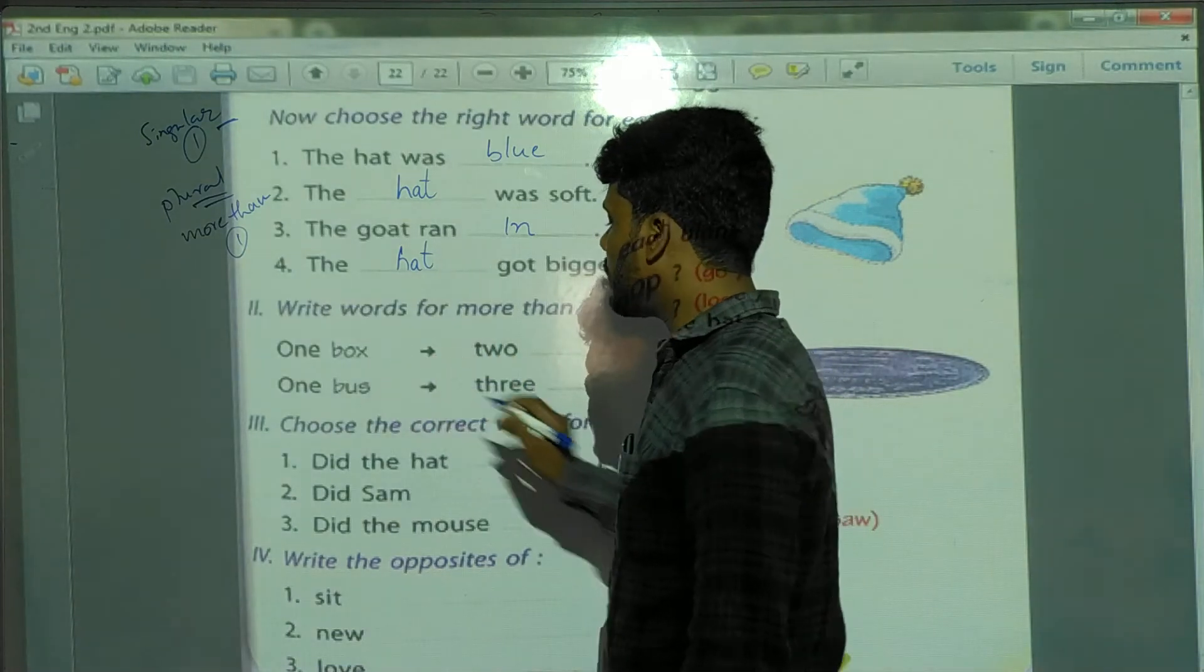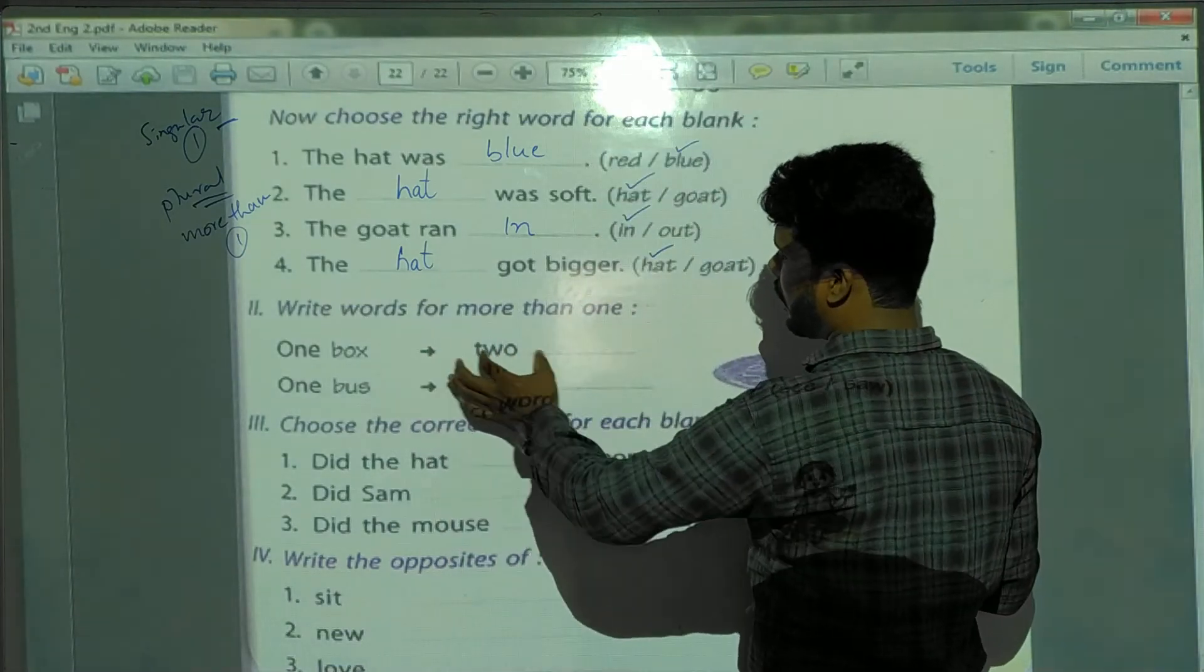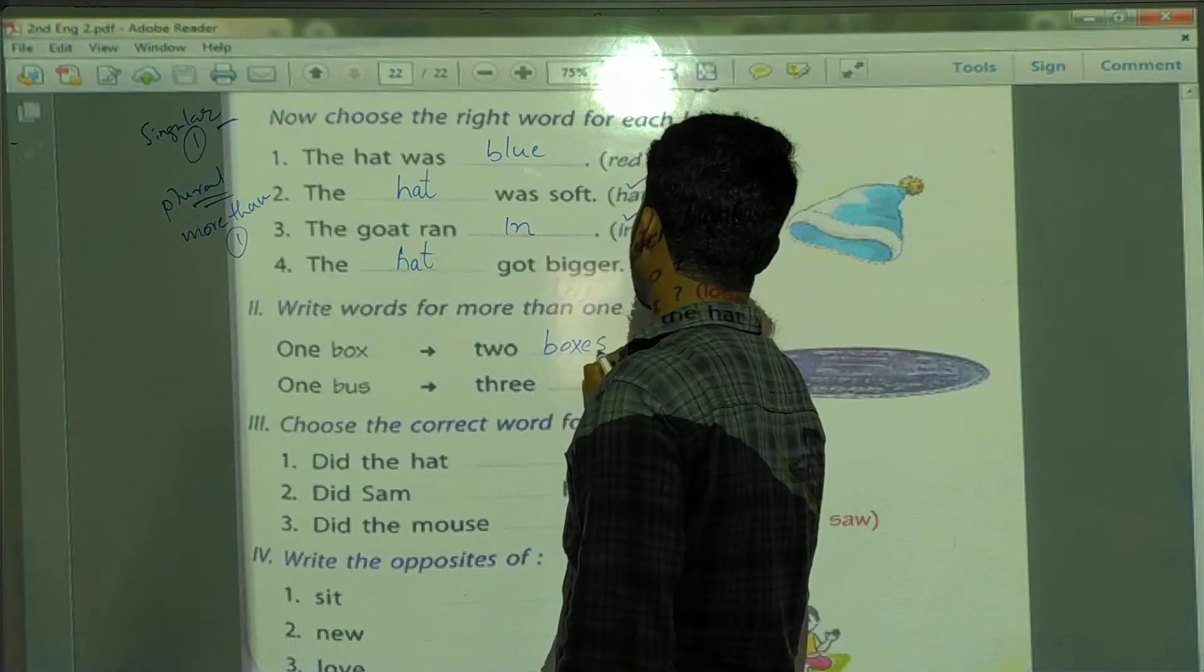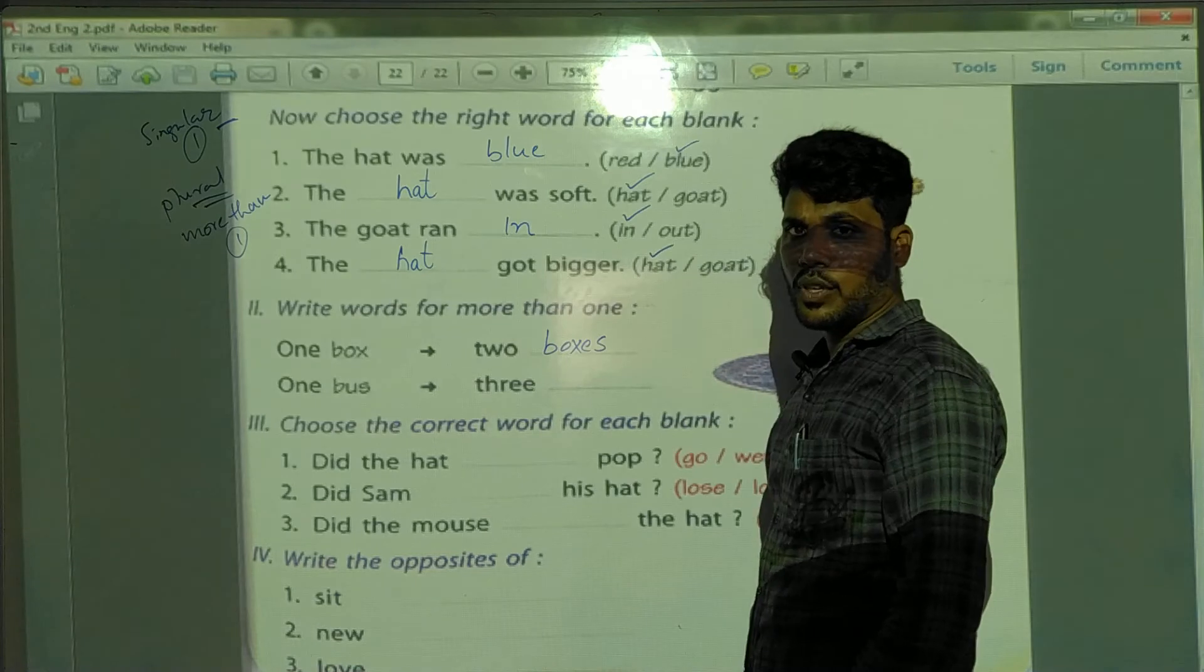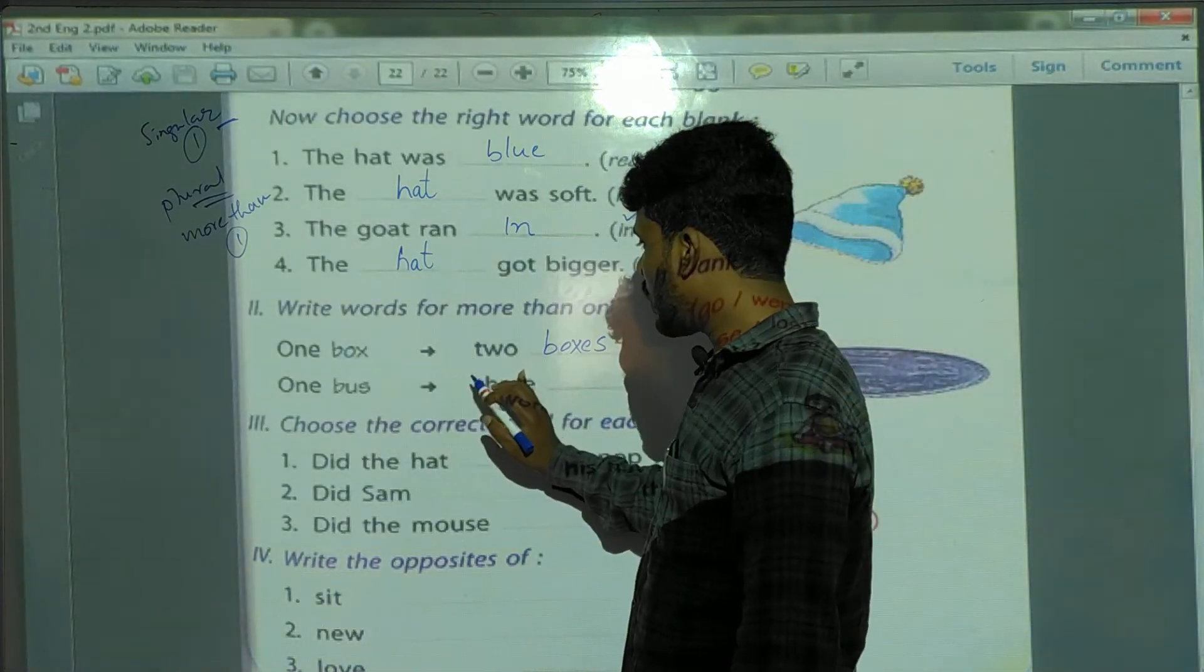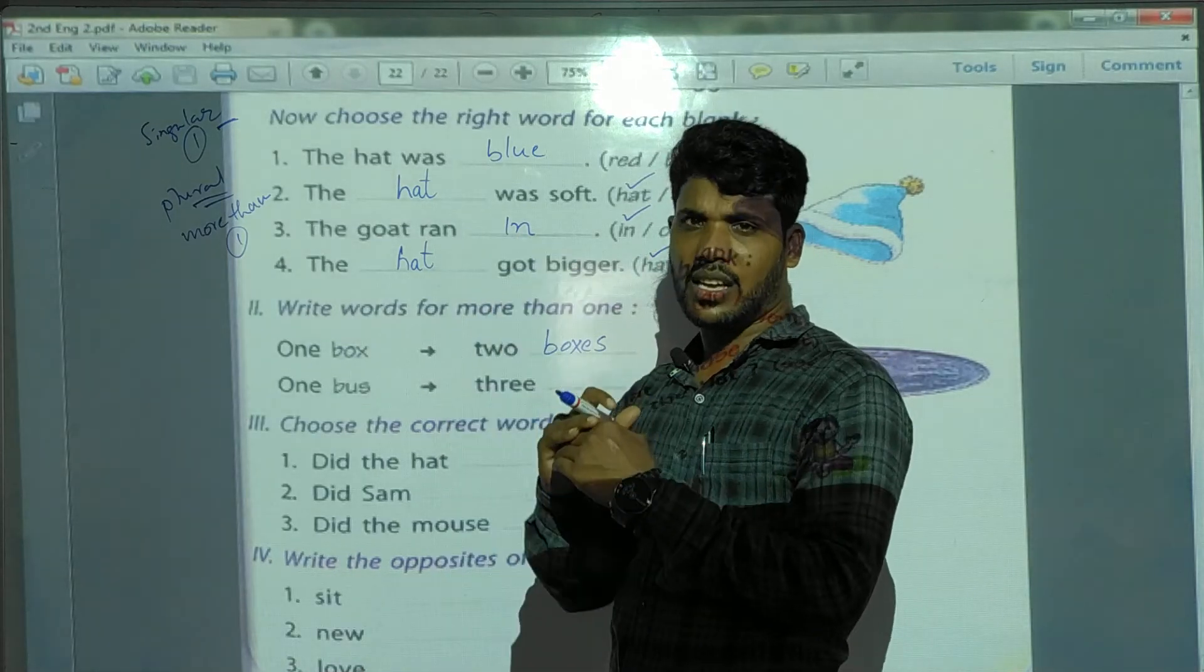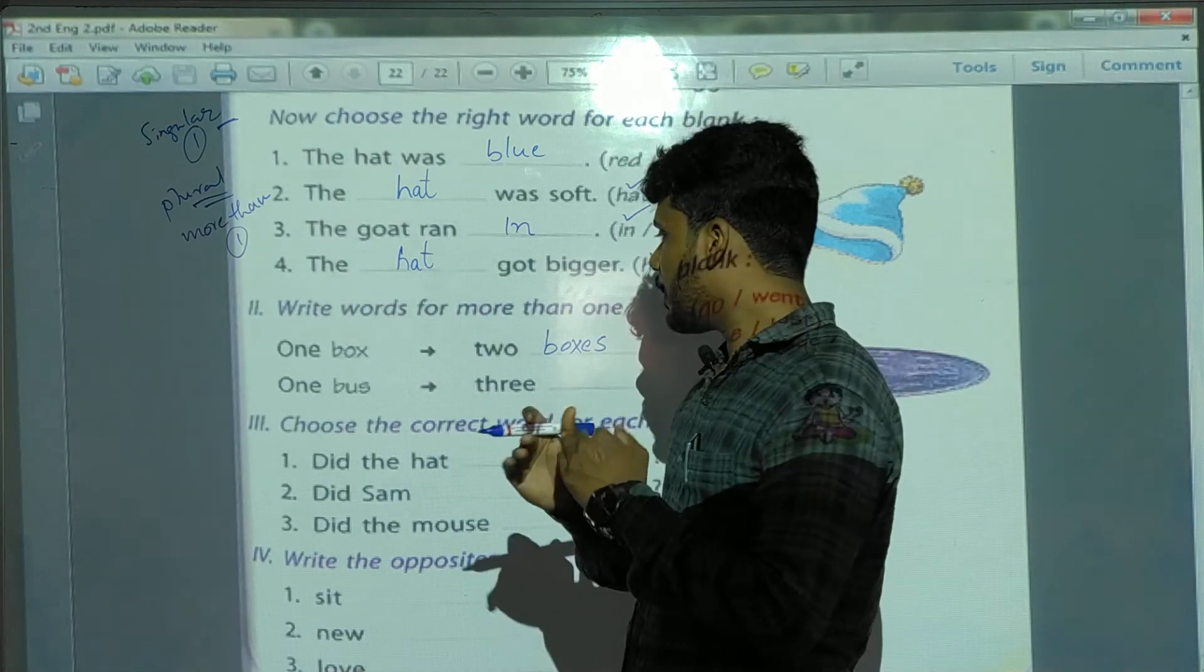So, here one box means it is a singular. So, when we write plural, what will become? Two boxes. What will become? Two boxes, because here it is more than one. Two is, two is greater than one or less than one? Greater than one is four.